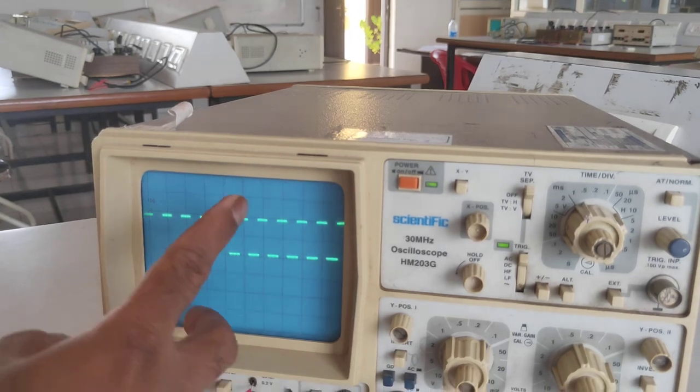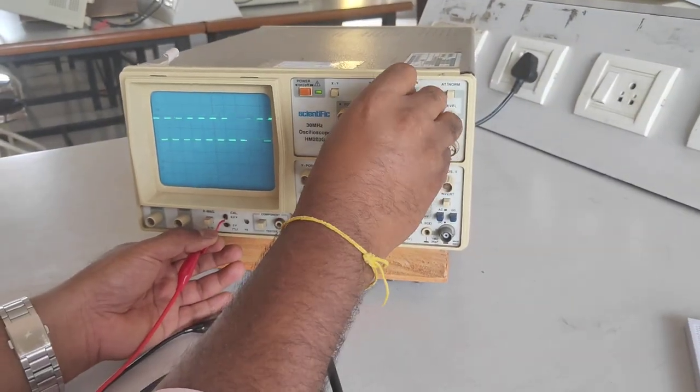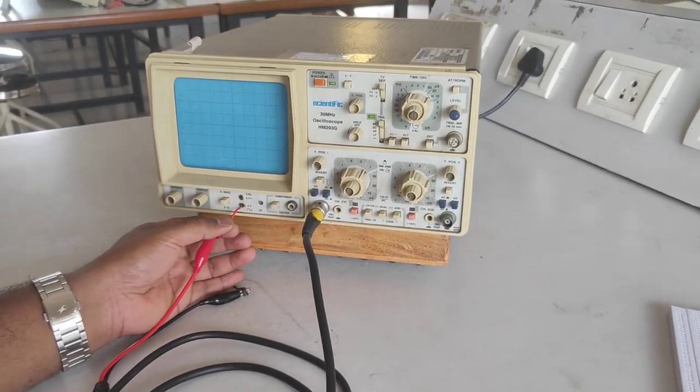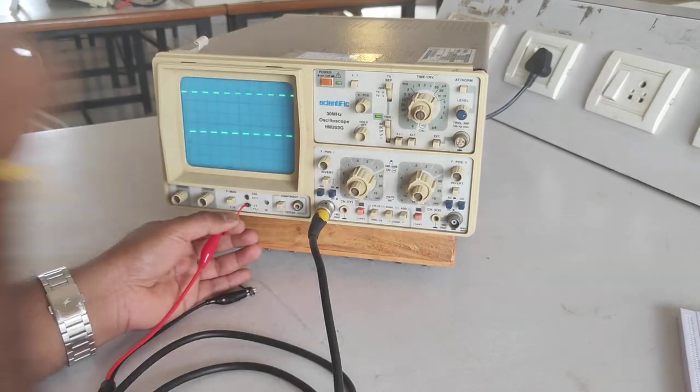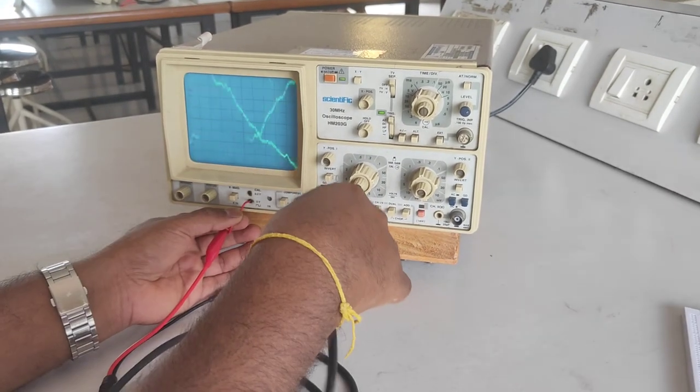I will show you later how to measure the amplitude. First, you check whether the signal is coming. If it is coming, your probe is working properly and this calibration point is also working. Here also I can show you - these two points are working fine, and your probe is also there.